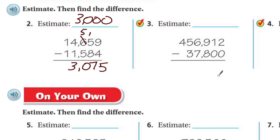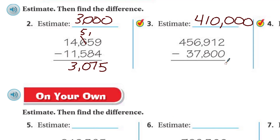Next estimate: 456,912 — I'd call that 450,000. Minus the other number — I'd call that about 40,000. So 450 minus 40 is like 410,000. Now subtracting: 2, 1, 1 — need to regroup. 16 minus 7 is 9. 4 minus 3 is 1. Then we get 4. The answer is about 419,000, which is close to my estimate of 410,000.